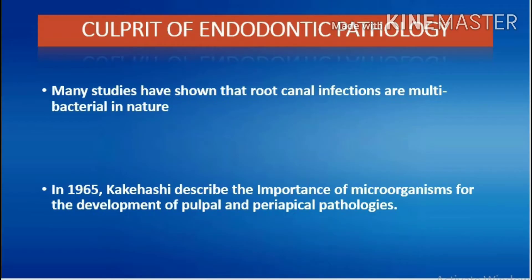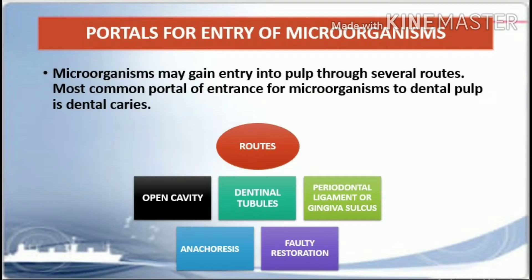Culprit of endodontic pathology: many studies have shown that root canal infections are multi-bacterial in nature. In 1965, Kekhashi described the importance of microorganisms for the development of pulpal and periapical pathologies. Microorganisms may gain entry into the pulp through several routes. The most common portal of entrance is dental caries. Other routes include open cavity, dentinal tubules, periodontal ligament or gingival sulcus, anachoresis, and faulty restoration.